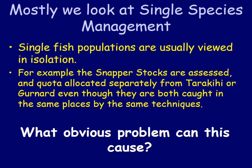The obvious problem is that you could overfish one species while trying to catch another. Or if you have an overfished species, you might not be able to prevent it from continuing to be overfished if you're using the same technique to catch another species.